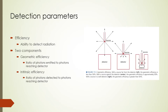Let's define a few detection parameters. The efficiency of a detector is also called sensitivity and is a measure of its ability to detect radiation. We can obtain efficiency by placing a detector in the vicinity of energetic photons, measuring the number of photons reaching the detector, and dividing by the number of photons emitted. This is called geometric efficiency. Intrinsic efficiency is defined as the number of photons detected divided by the number of photons reaching the detector. The figure illustrates the concept of geometric efficiency.